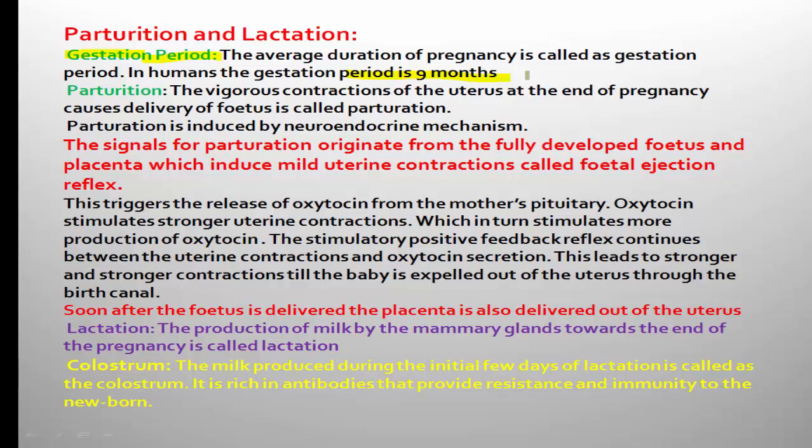Parturition occurs at the end of pregnancy. If there is no complication, no miscarriage or abortion, parturition occurs at the end or completion of the gestation period. The vigorous contractions of the uterus at the end of pregnancy cause delivery of the fetus, and this is called parturition — simply, giving birth to the fully developed fetus after nine months.